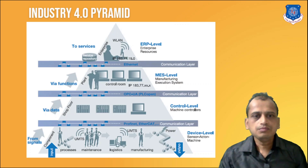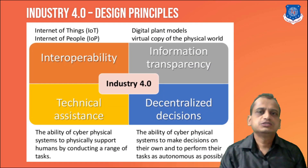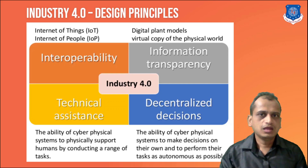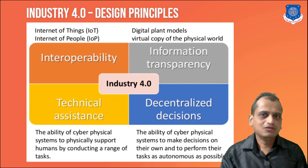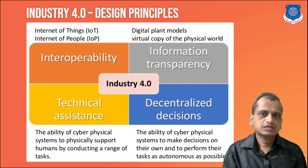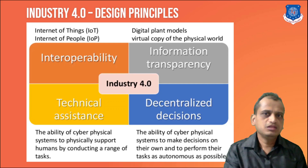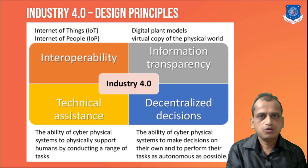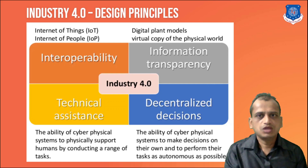Now let's discuss the design principles of Industry 4.0. The first principle is interoperability — regardless of the devices used in Industry 4.0, they can interoperate within different manufacturing units. Just as Android mobile phones can connect and communicate based on standards, the same happens within Industry 4.0 manufacturing units. The second principle is information transparency — digital plant models and digital copies of the plant are maintained, and data should be transparent without any loss so you can make accurate digital copies of those models.